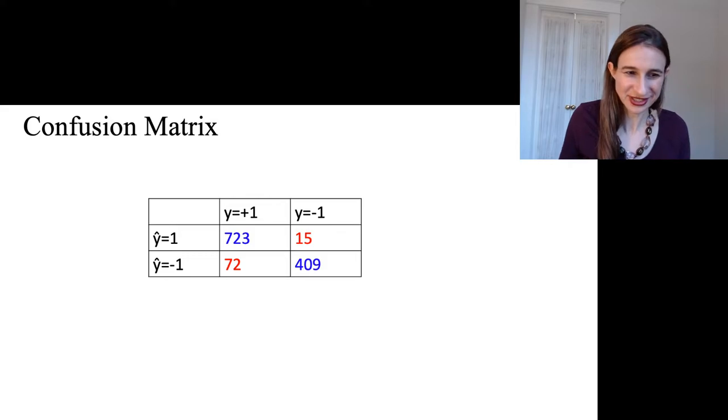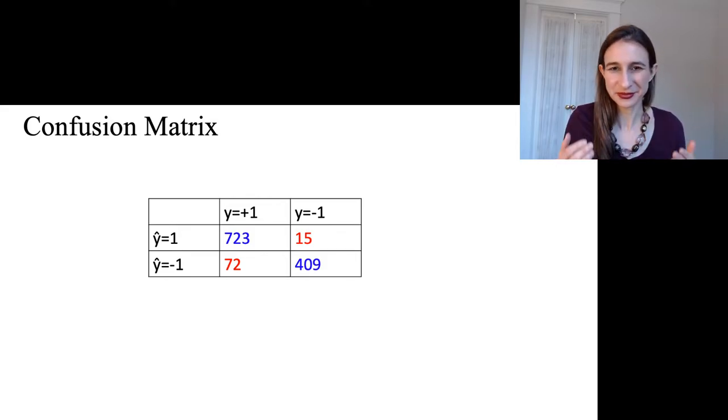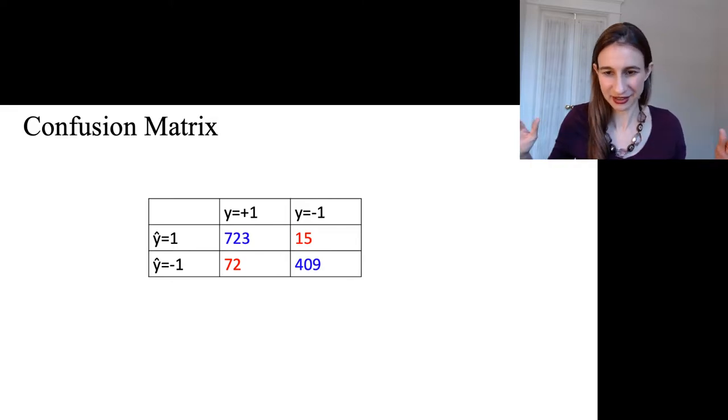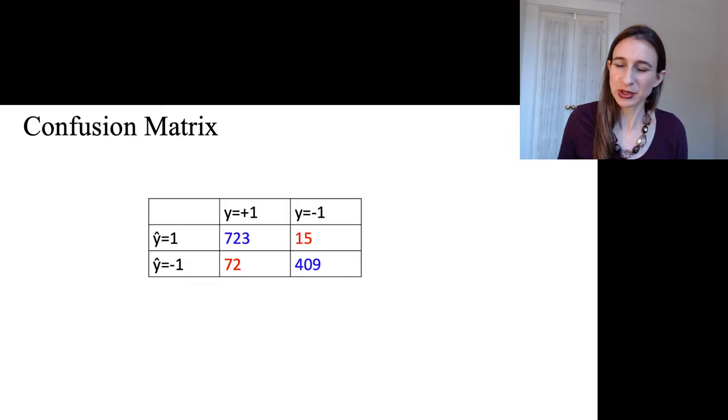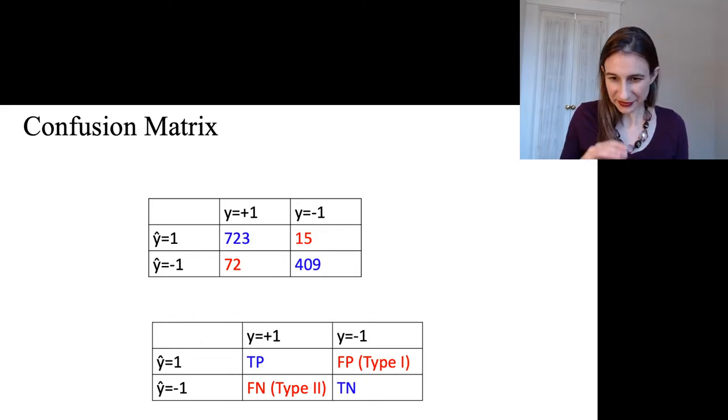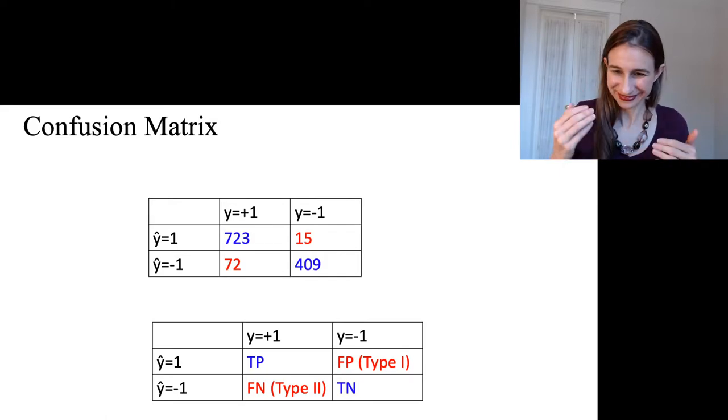And so these four things, they go in a matrix. It's called the confusion matrix. And confusion matrices are very useful to look at when you're doing any kind of applied classification task because they give you a lot more information than just looking at the classification error, especially when your data is imbalanced. Like if you have much fewer positives than you have negatives, then it's really important to look at the whole confusion matrix rather than just looking at the overall classification error. Because the overall classification error is mostly coming from that larger class. So you want to look at how the classifier is doing on both classes.